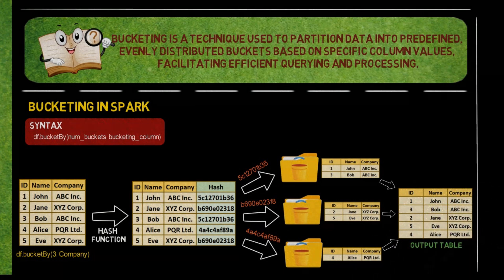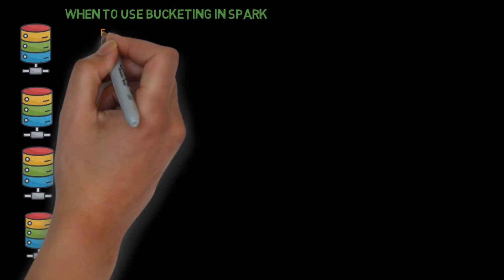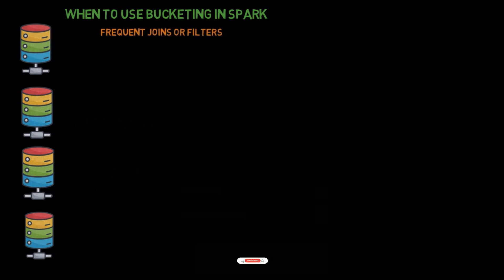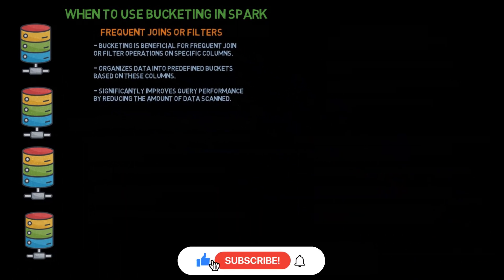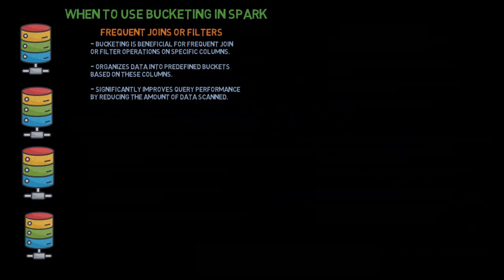Bucketing helps in organizing and partitioning data for efficient querying and processing, especially in scenarios involving joins and aggregations. When to use bucketing in Spark: for frequent joins or filter operations on specific columns, bucketing organizes data into predefined buckets based on those columns, significantly improving query performance by reducing the amount of data scanned.